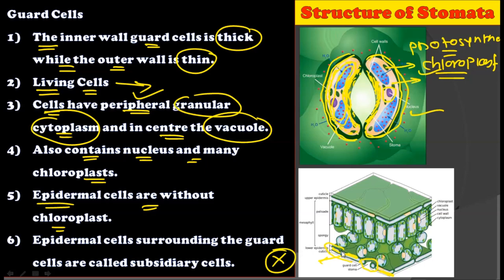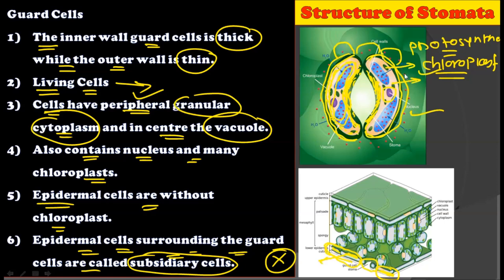This is a very important analytical feature of stomata — that its guard cells contain chloroplasts, but the epidermal cells surrounding these stomata do not contain any type of chloroplasts; they are devoid of chloroplasts. The epidermal cells surrounding the guard cells are called subsidiary cells. In some plants, the guard cells of the stomata are surrounded by specific epidermal cells, and in such a condition, these epidermal cells are called subsidiary cells.